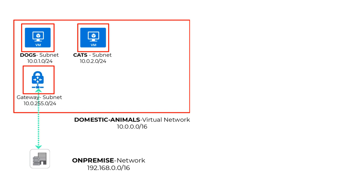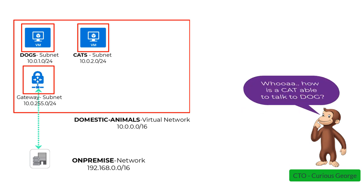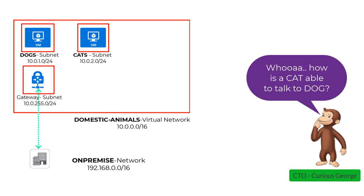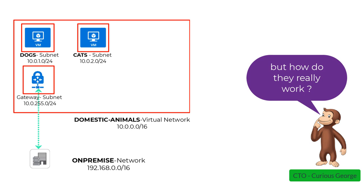The Modern Zoo had a new CTO, Curious George. George was curious about everything that happened around him. He was amazed at how the VMs from the cat subnet are able to talk to the VMs from the dog subnet. The first response given was that these two VMs were able to talk to each other because they're in the same virtual network. But Curious George was not satisfied with superficial answers — he wanted to know how they talked. So let's go a level deeper and understand how these VMs are able to talk to each other.